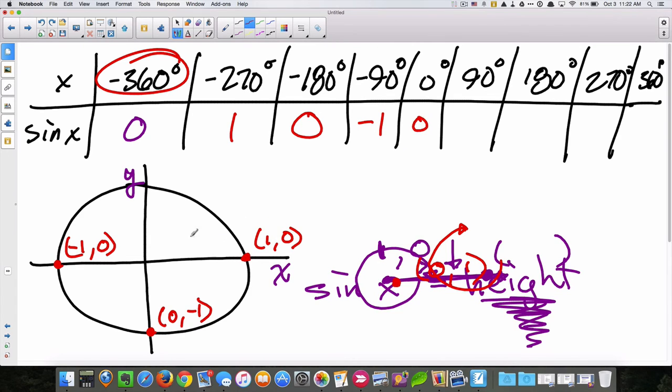We're back to here, zero. 90, we're back to zero comma one, so this is one. 180, we're back over to here. And 270, we're back down here. And 360, we're back over here, zero.